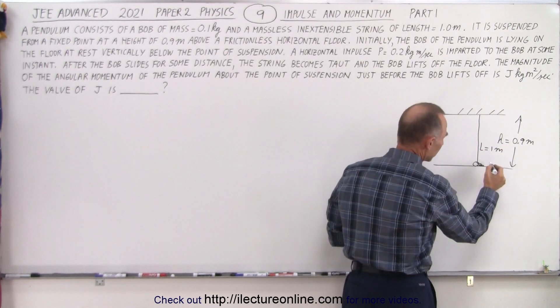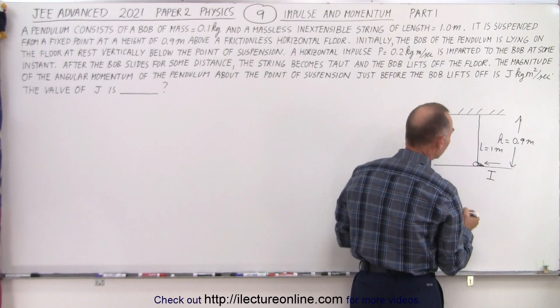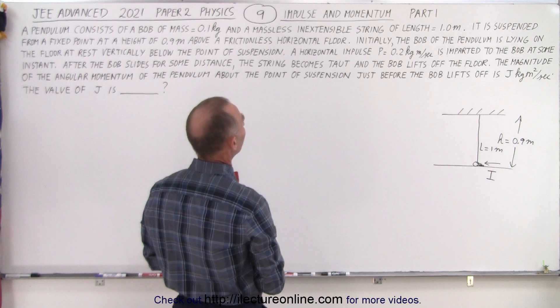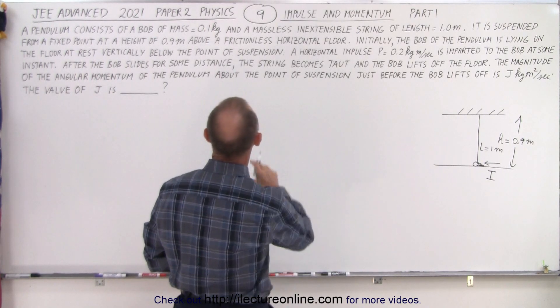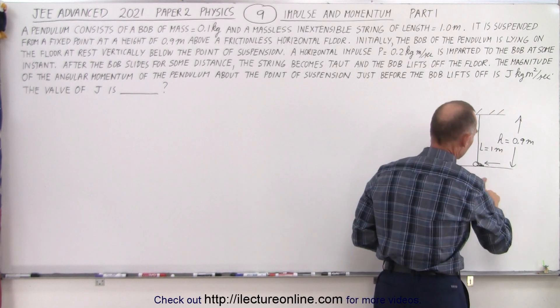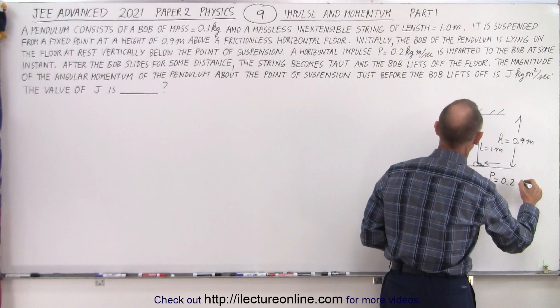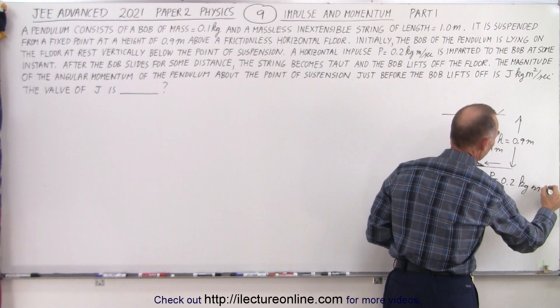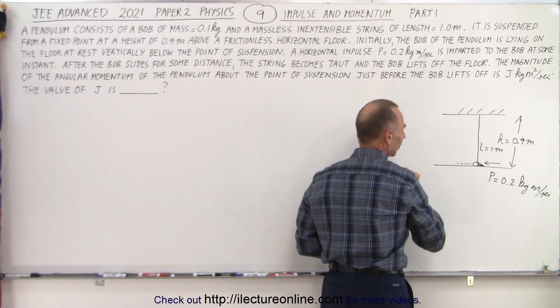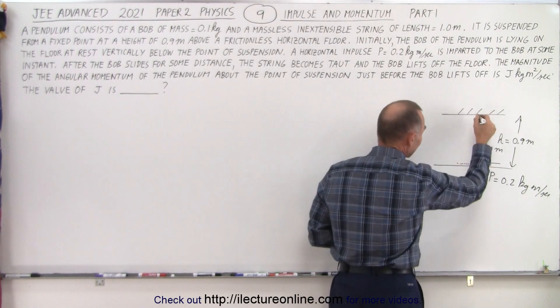Now we impart upon it an impulse. I like to use the letter I for impulse but they use impulse P here. So P is equal to 0.2 kilogram meters per second and that causes the bob to move in a horizontal direction. It's going to do that for a while until the string is tight.